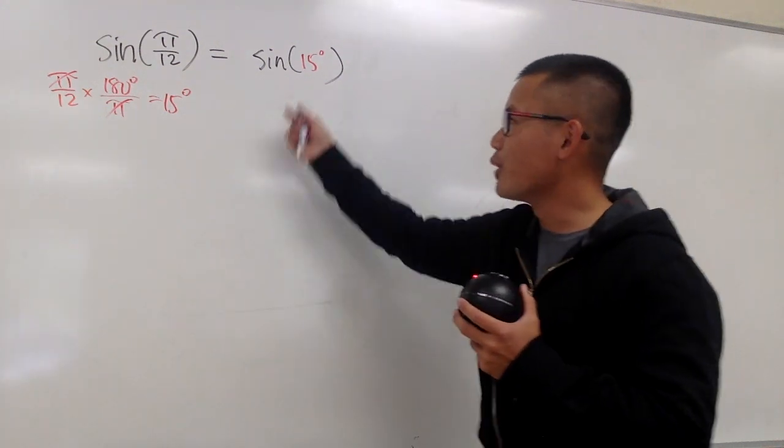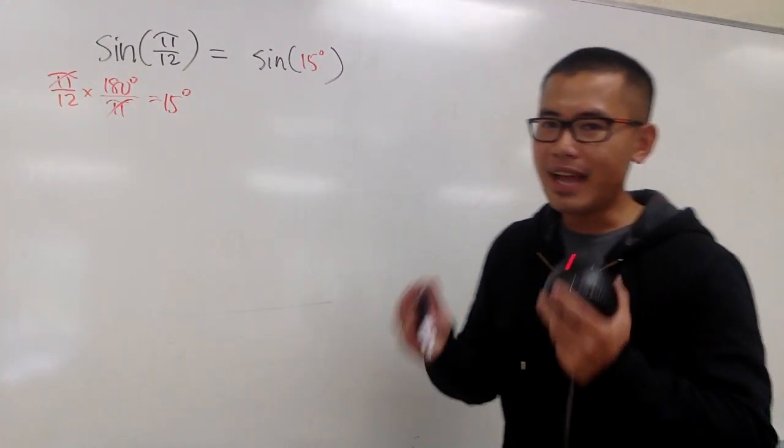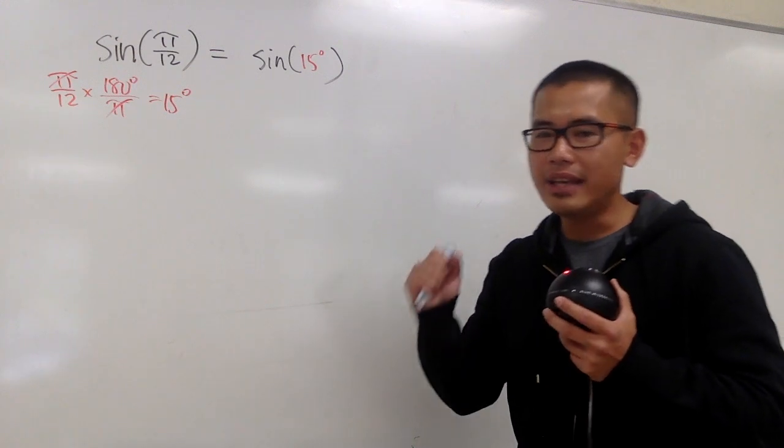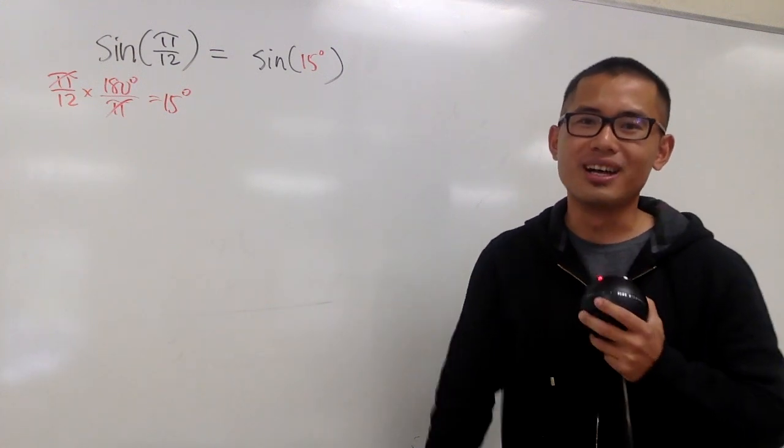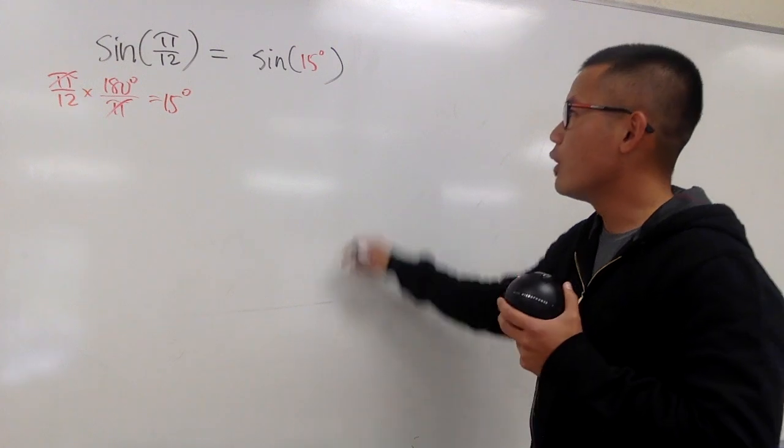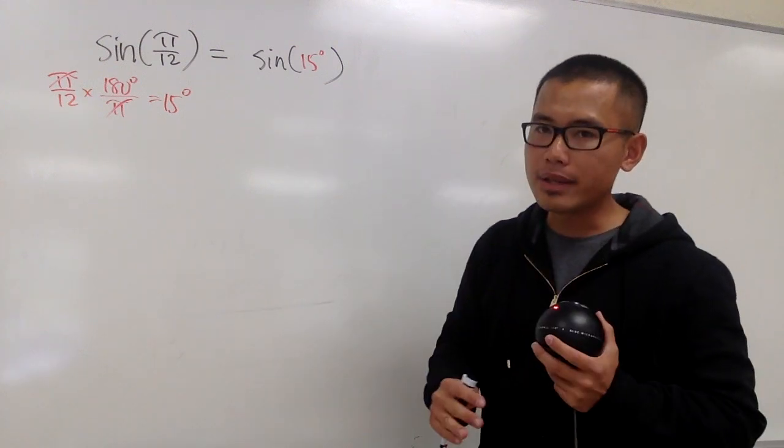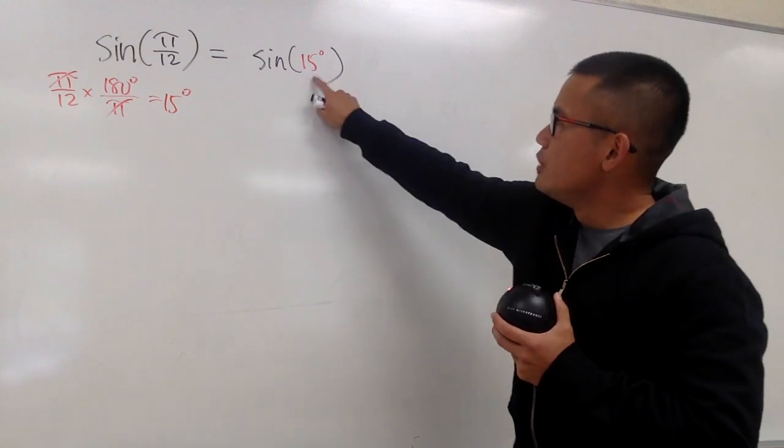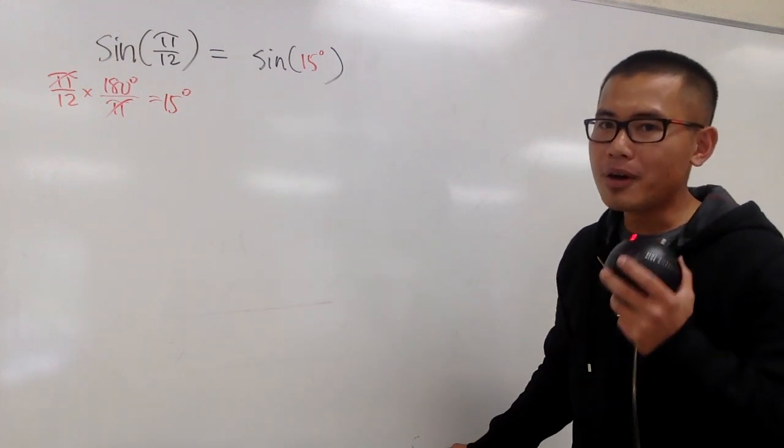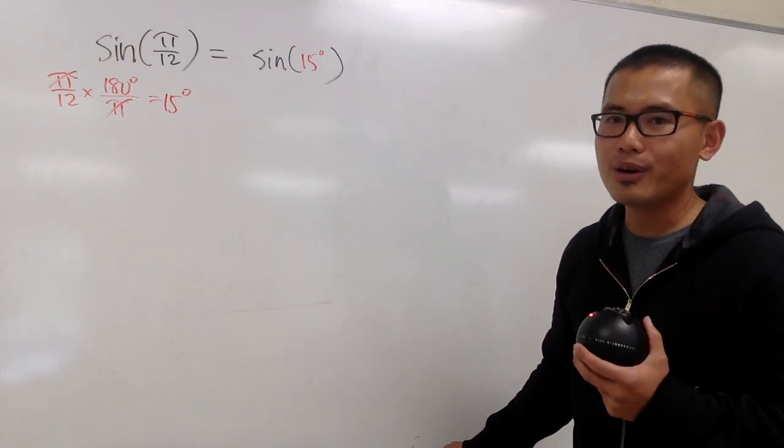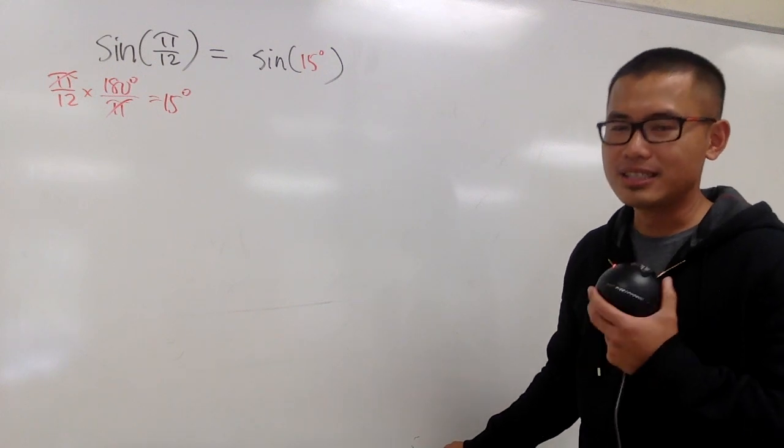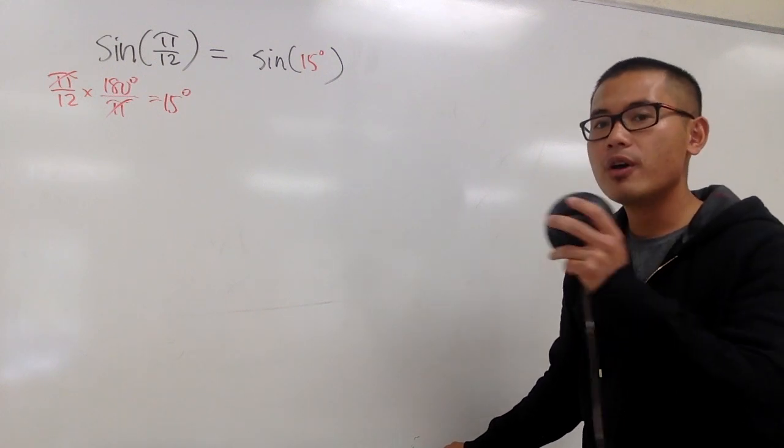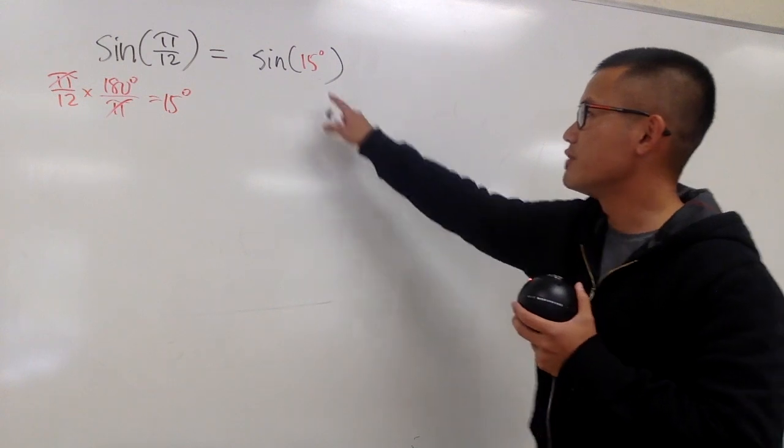However, we don't know about this right away. Now we have to utilize either the angle sum formula or the angle difference formula for the sine. What plus what will be 15, or what minus what will be 15? Look at 15. We know about 30, it's a special angle, and also 45, it's a special angle. And we know 45 minus 30 is 15.